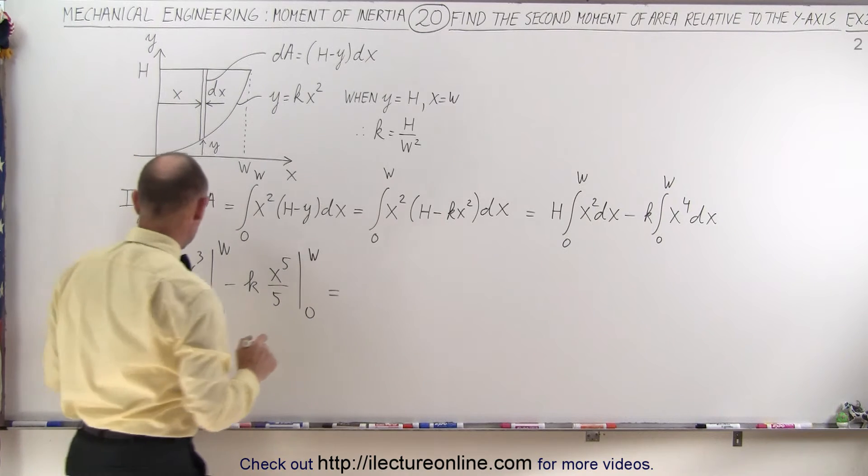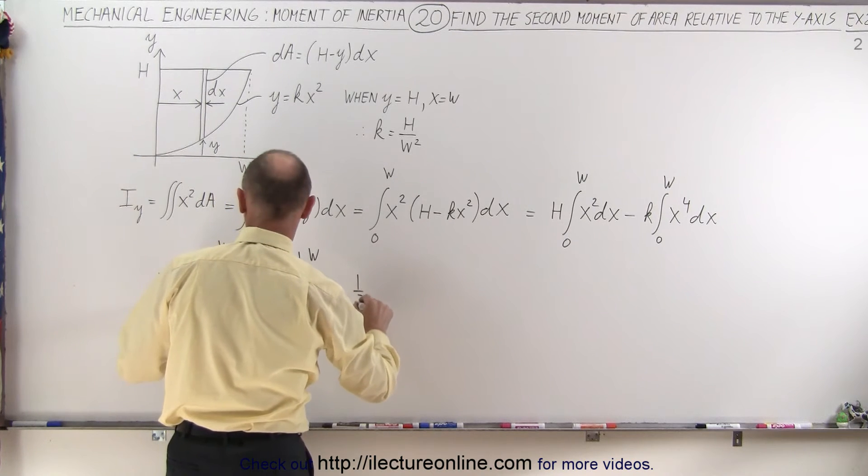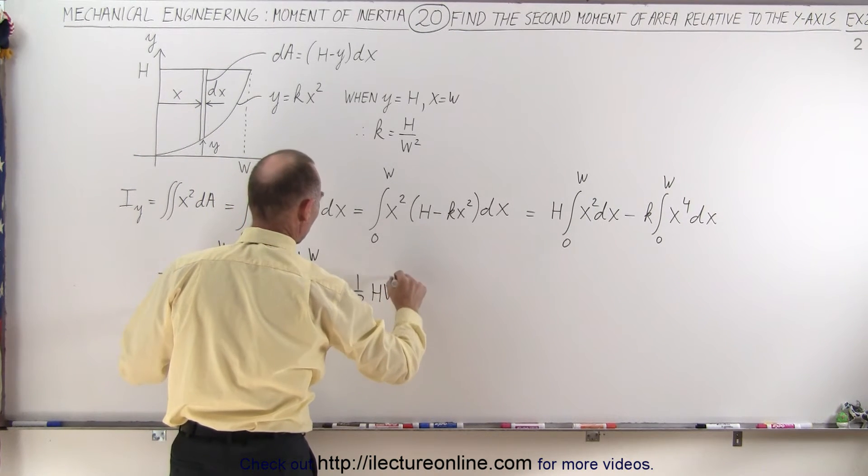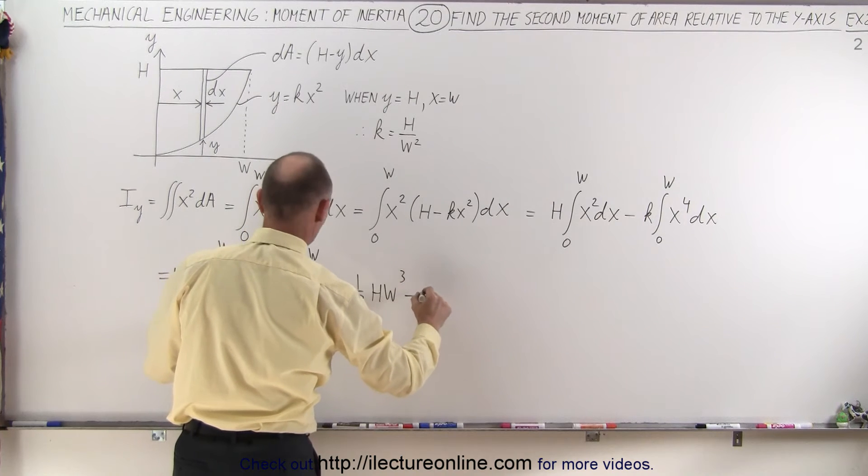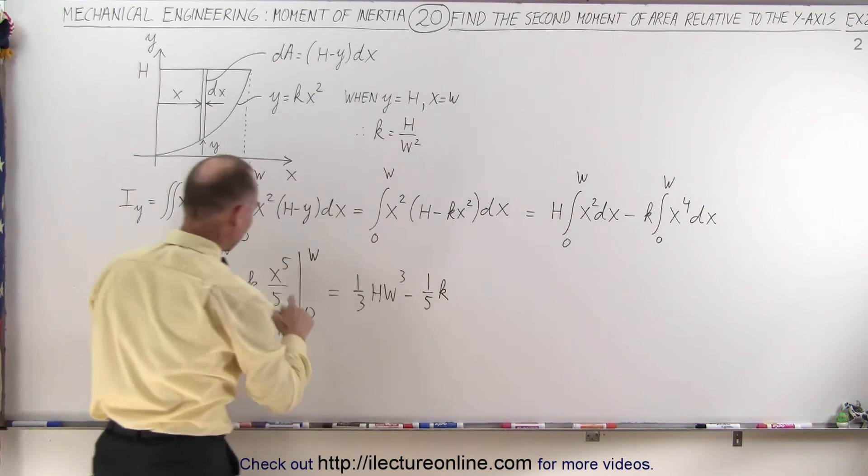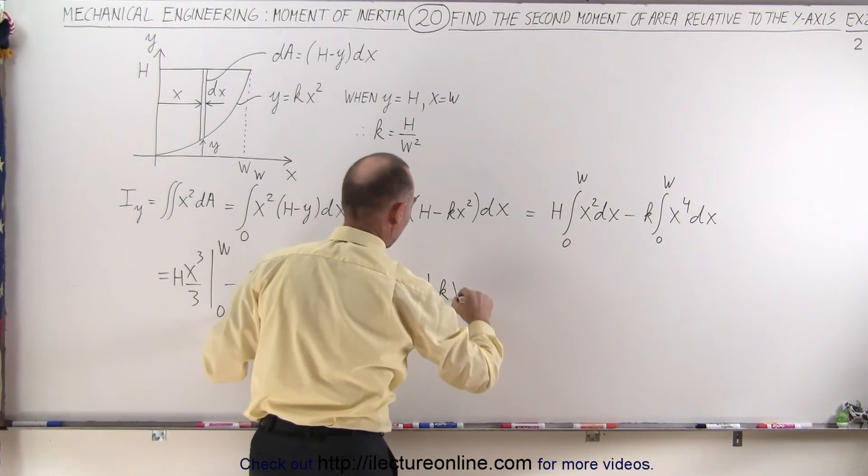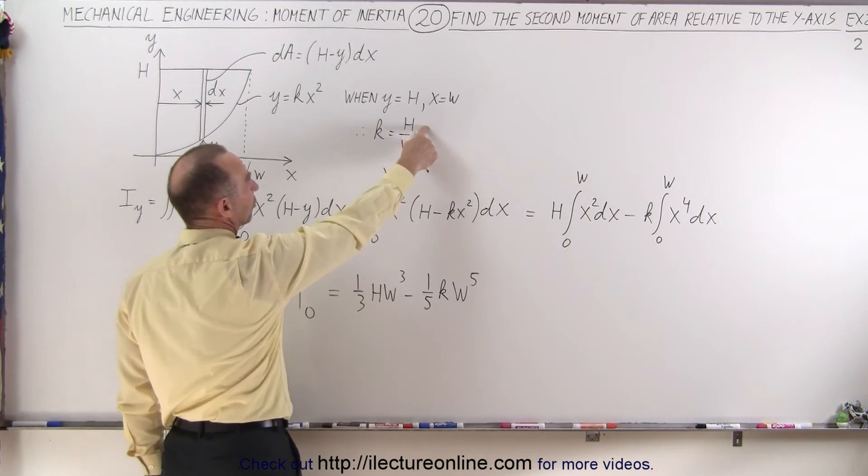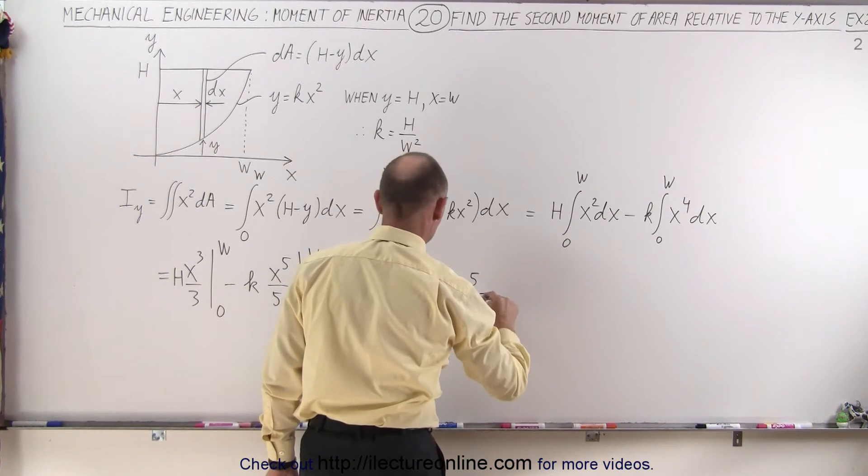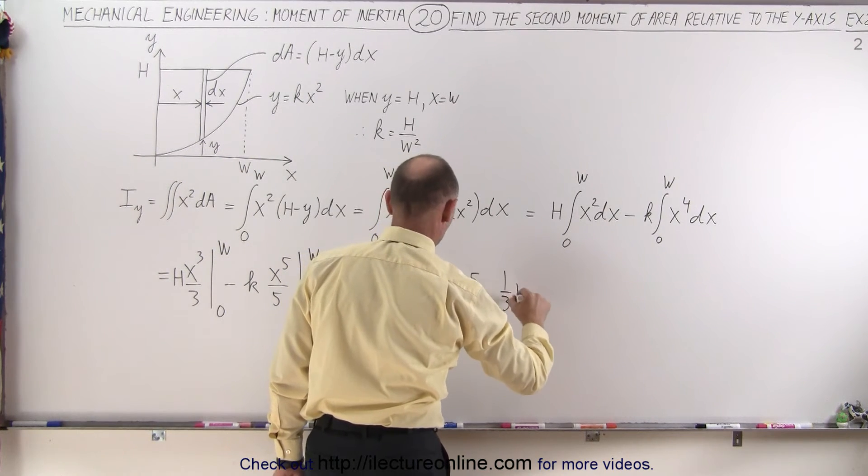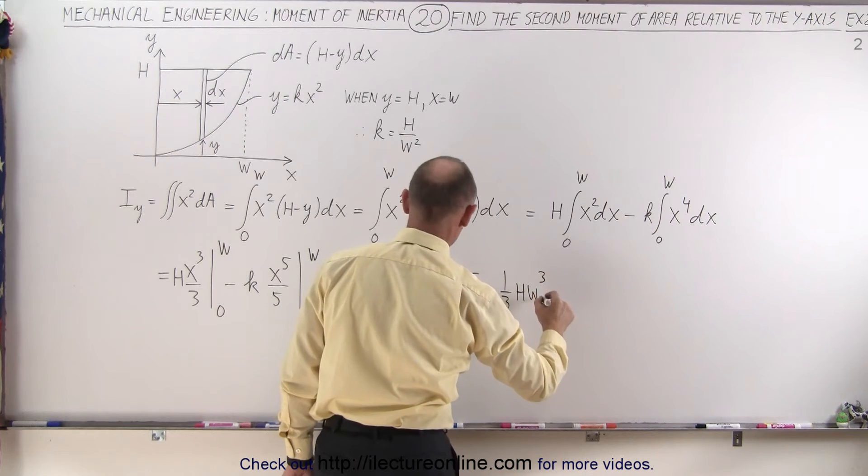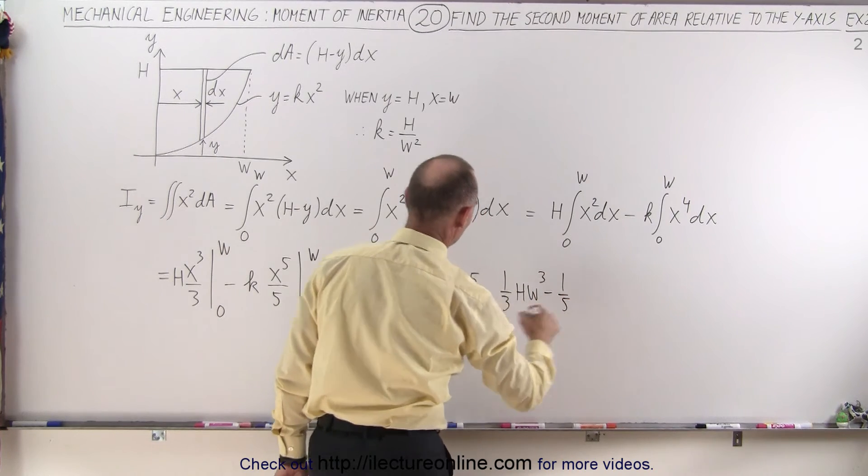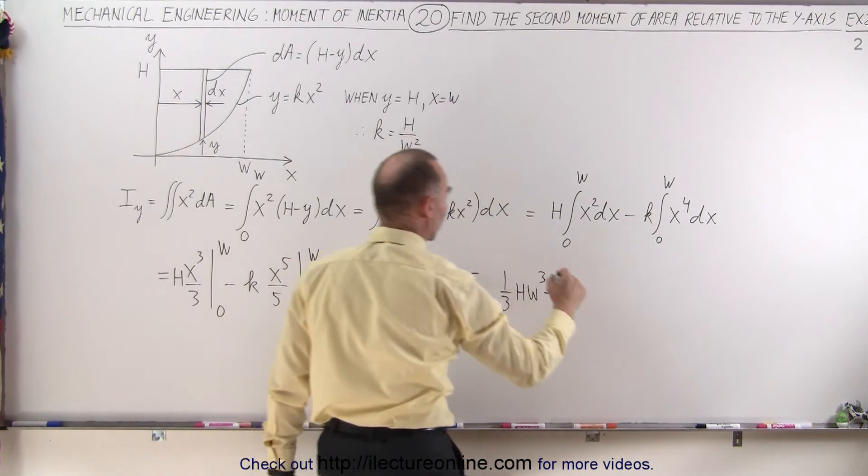When we plug in the limits, we get one-third h w cubed minus one-fifth k w to the fifth power. But now when we substitute what k is equal to, which is h divided by w squared, this becomes one-third h w cubed minus one-fifth h w cubed.